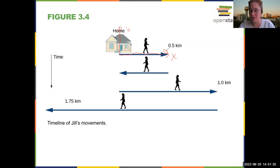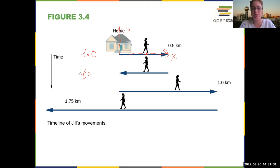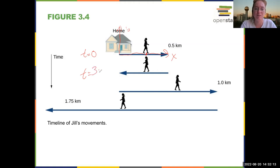This is showing you where Jill is — the displacement vector as a function of time. Jill is half a mile from her house, and we call this t equals zero, the initial time. After about three minutes — Jill's a fast walker doing about 10 kilometers per hour — she is one kilometer away.